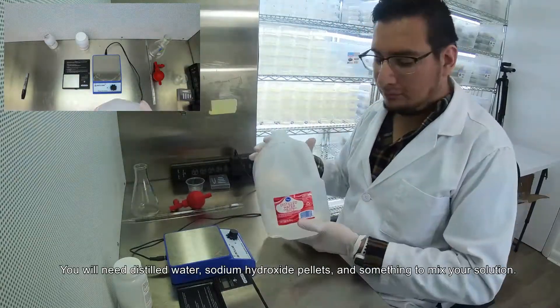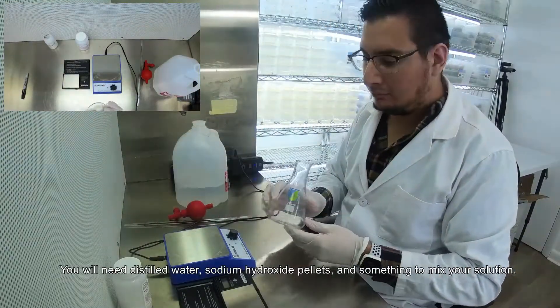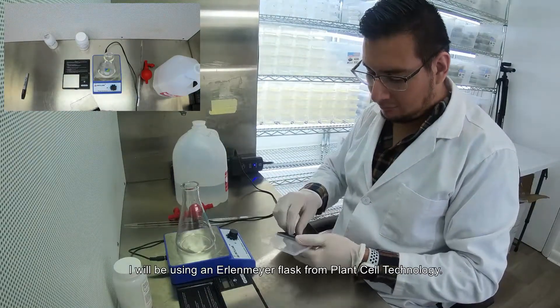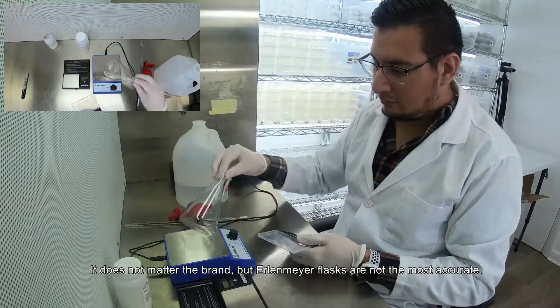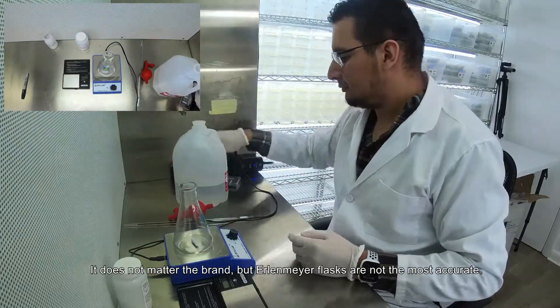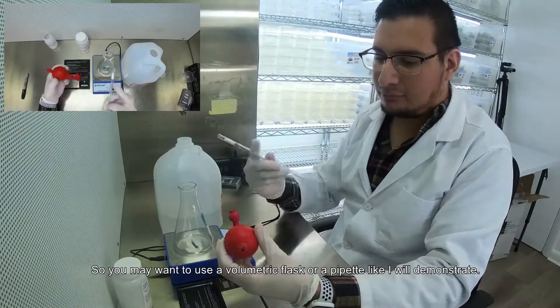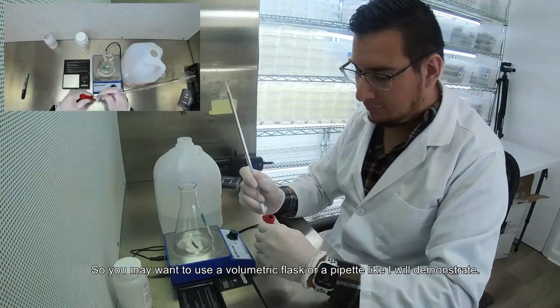You will need distilled water, sodium hydroxide pellets, and something to mix your solution. I will be using an Erlenmeyer flask from Plant Cell Technology. It does not matter the brand, but Erlenmeyer flasks are not the most accurate, so you may want to use something like a volumetric flask or a pipette like I will demonstrate.